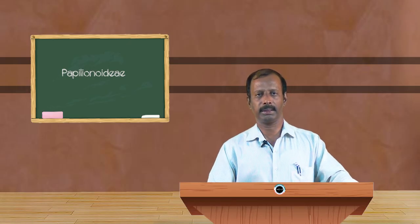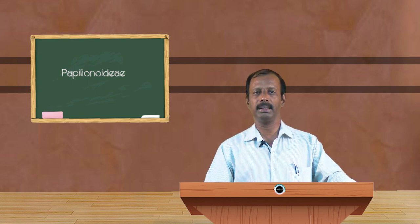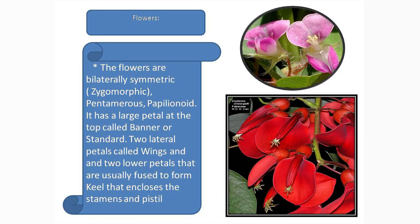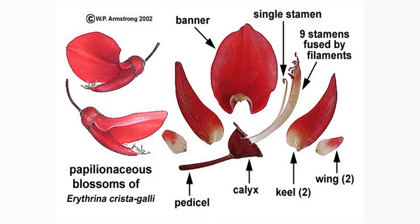Coming to the individual flowers: an individual flower is usually zygomorphic in nature. The flowers are zygomorphic, bisexual, bracteate, complete, and usually hypogynous in nature. The flowers vary in color, are very attractive, and are known for their diverse configuration.